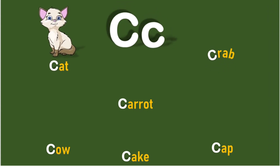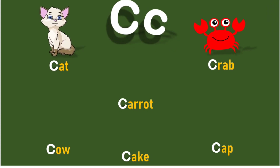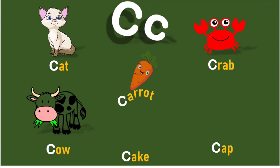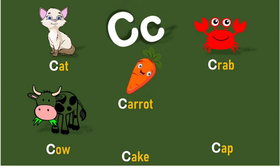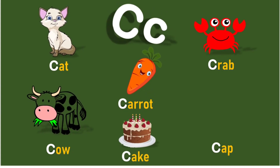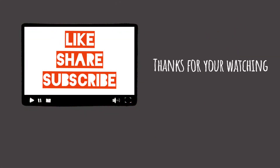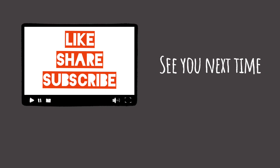C for crab, C for cow. Cow, carrot, cat, cap. Like, share and subscribe for more videos! Bye bye guys!